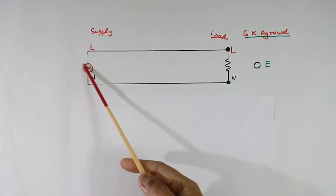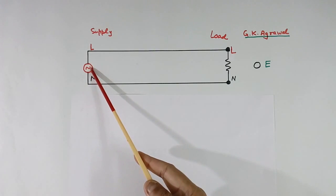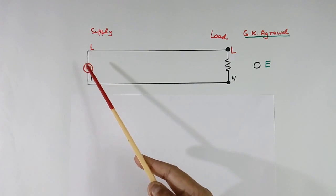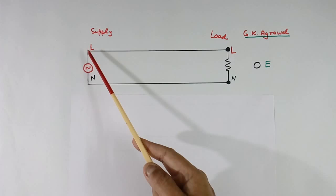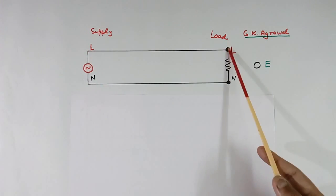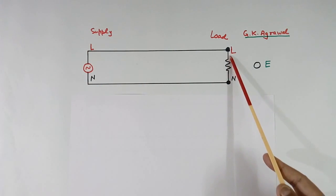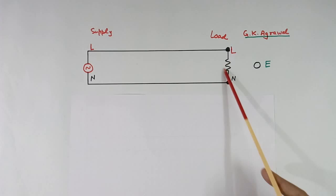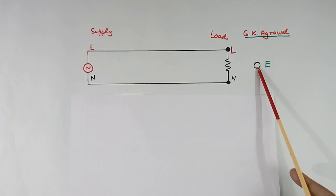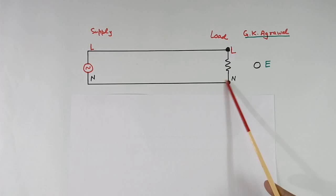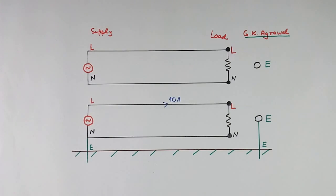Now this is AC supply. From the generator, the connection will come to the substation. From the substation, two wires will come: line and neutral. And this is the load in our house. This is the earth point of the socket. I have made no connection here — only the load is shown.